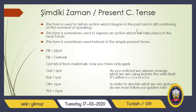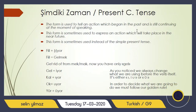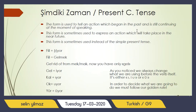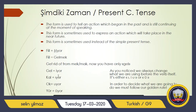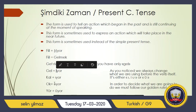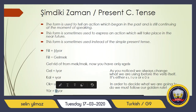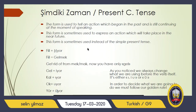So, you are going to add -iyor. Gel + iyor. Kal + iyor. And for the vowel in -iyor, you only have four options: i, ı, u, and ü. How do you decide which one to use? If you remember the nominal sentences, there were brothers and sisters — the same logic applies here.